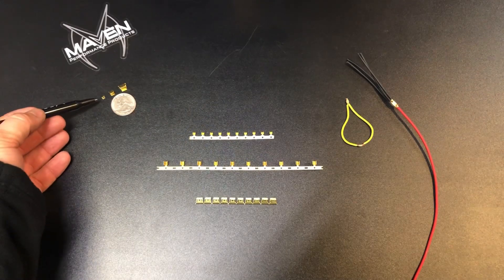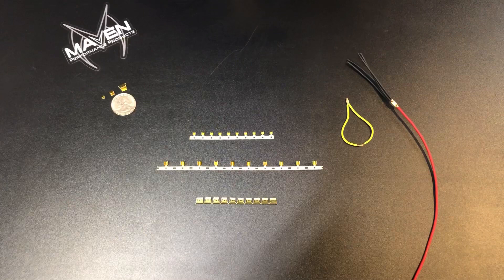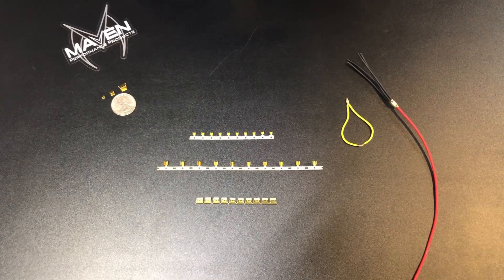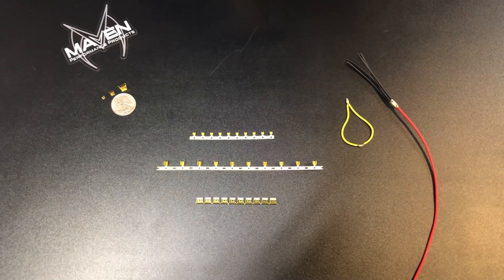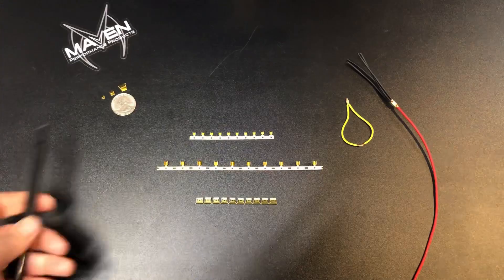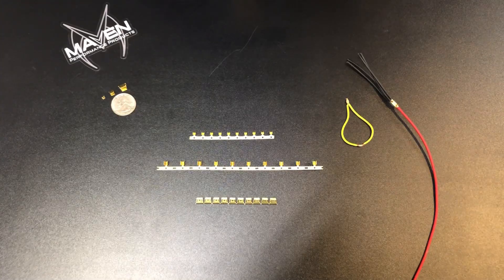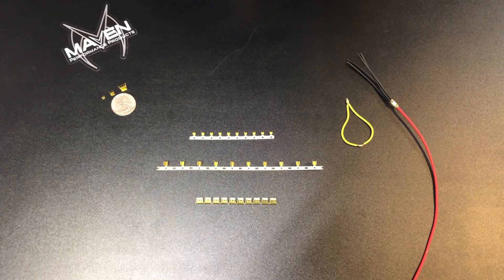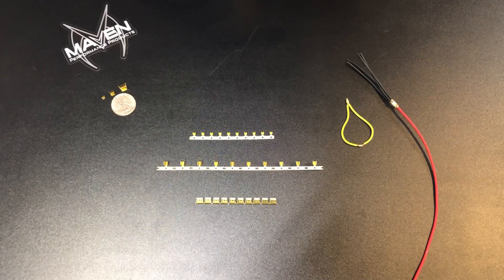You can see the small one's not much bigger than the tip of that pen. That's for splicing very small wires, like 22-gauge wires together. It's not as common as the medium and the large, but you do need to select the right one for the series of wires you're splicing together.